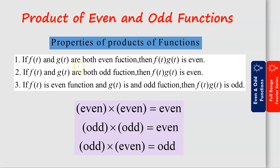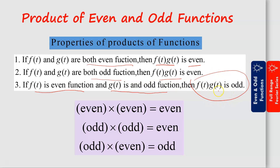We have the property of the product of functions. If f(t) and g(t) are both even functions, multiplying them gives an even function. If f(t) and g(t) are both odd functions, multiplying them also gives an even function. If one function is even and the other is odd, the product is an odd function. In summary: even times even equals even, odd times odd equals even, and odd times even or even times odd equals odd.